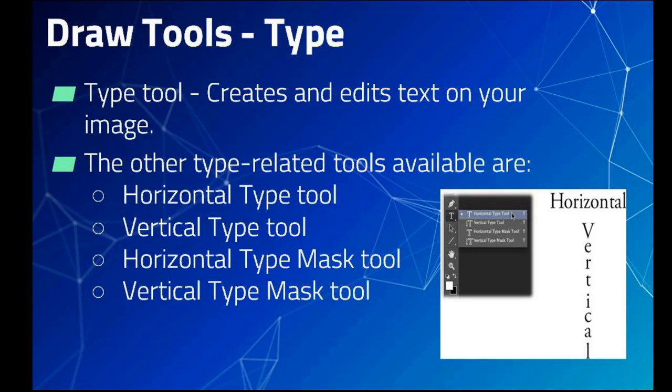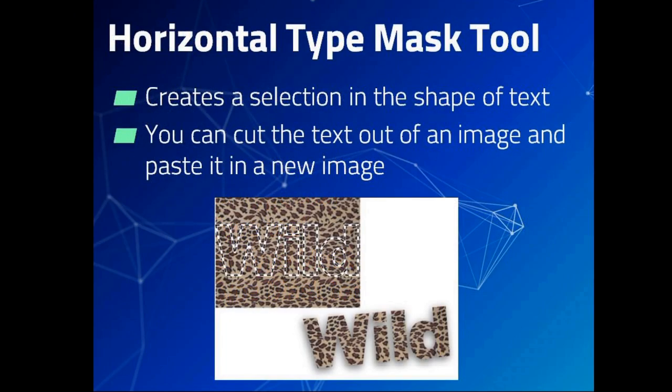The Type tool is used to create and edit text on your image. Other type-related tools available are the Horizontal Type tool, Vertical Type tool, Horizontal Type Mask tool, and Vertical Type Mask tool. The Horizontal Type Mask tool is used to create a selection in the shape of text — you can cut the text out of an image and paste it into a new image.